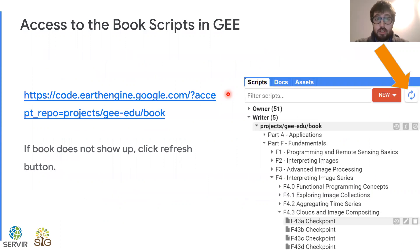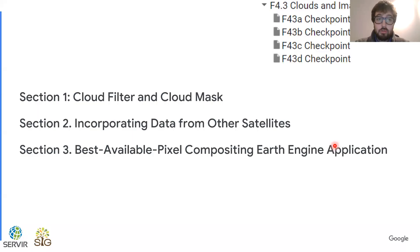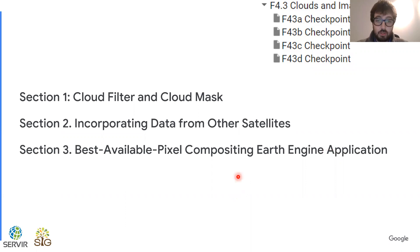Here you have the link to access the codes on your Google Earth Engine account, and we will see those codes together very soon. That concludes the first part of our presentation. In the second part, we will see the three sections of the F4.3 chapter using the codes that are detailed in the chapter and available on Google Earth Engine. I'm going to interrupt my presentation now.